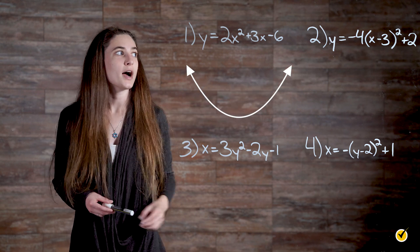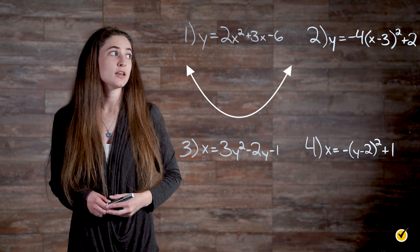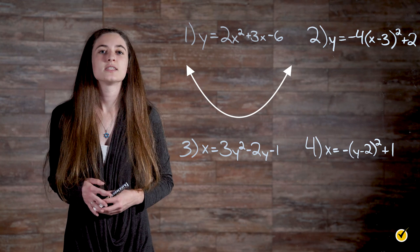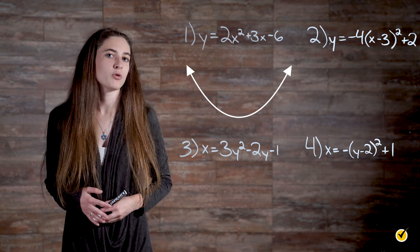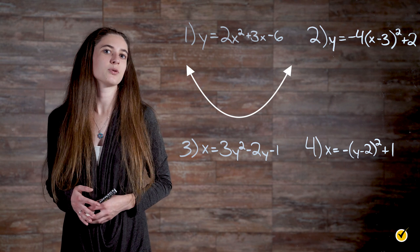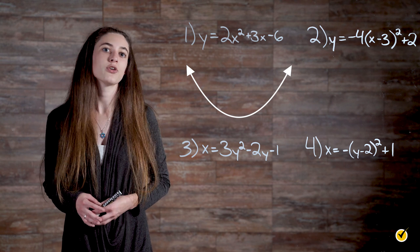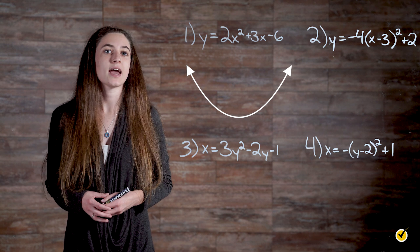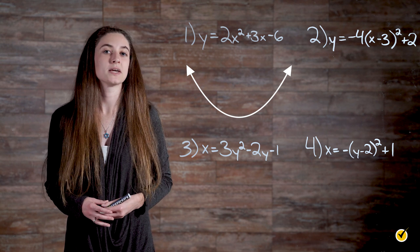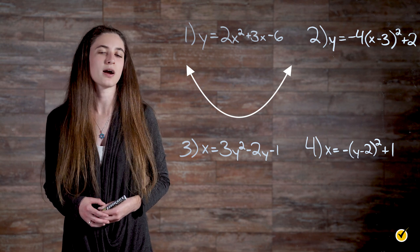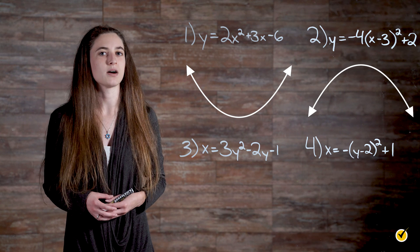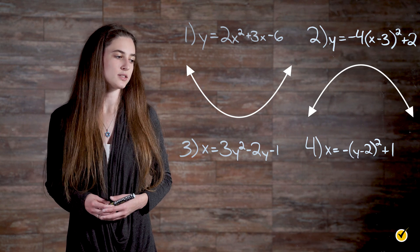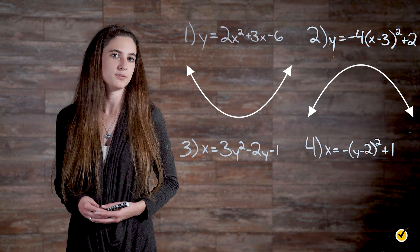The next equation is y equals negative 4 times (x minus 3) squared plus 2. This is a vertex form quadratic equation with the x variable squared, vertex at the ordered pair (3, 2), and a equals negative 4. Because a is less than 0, the parabola will open down.